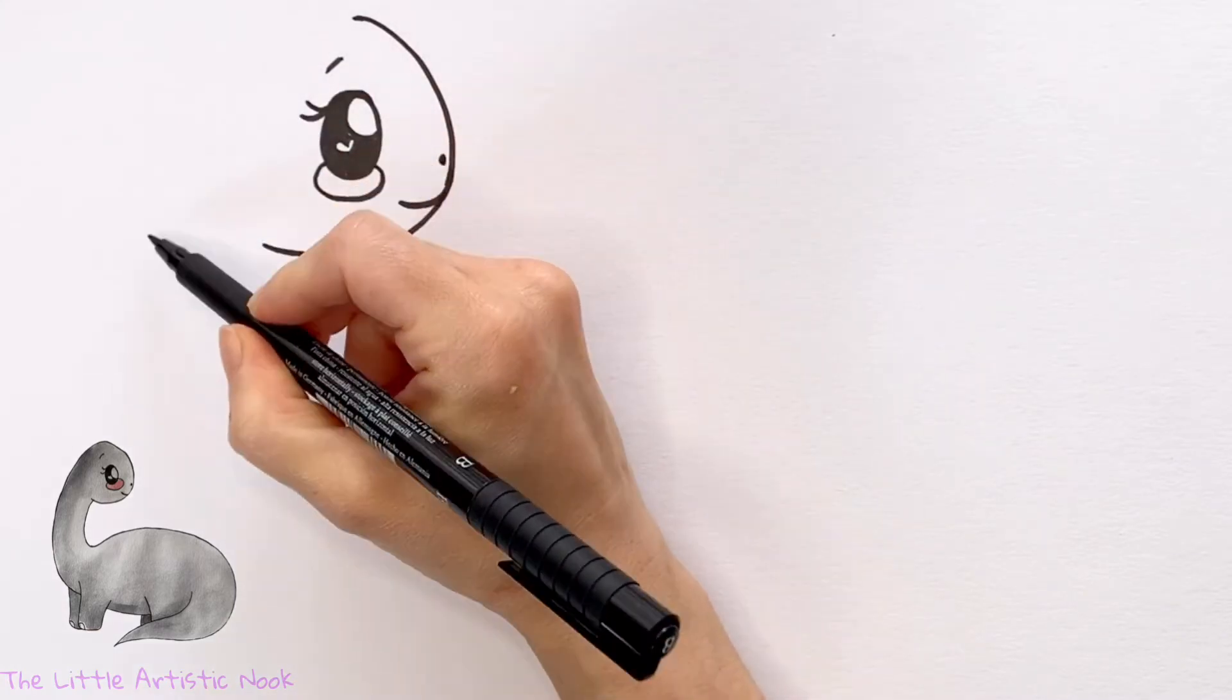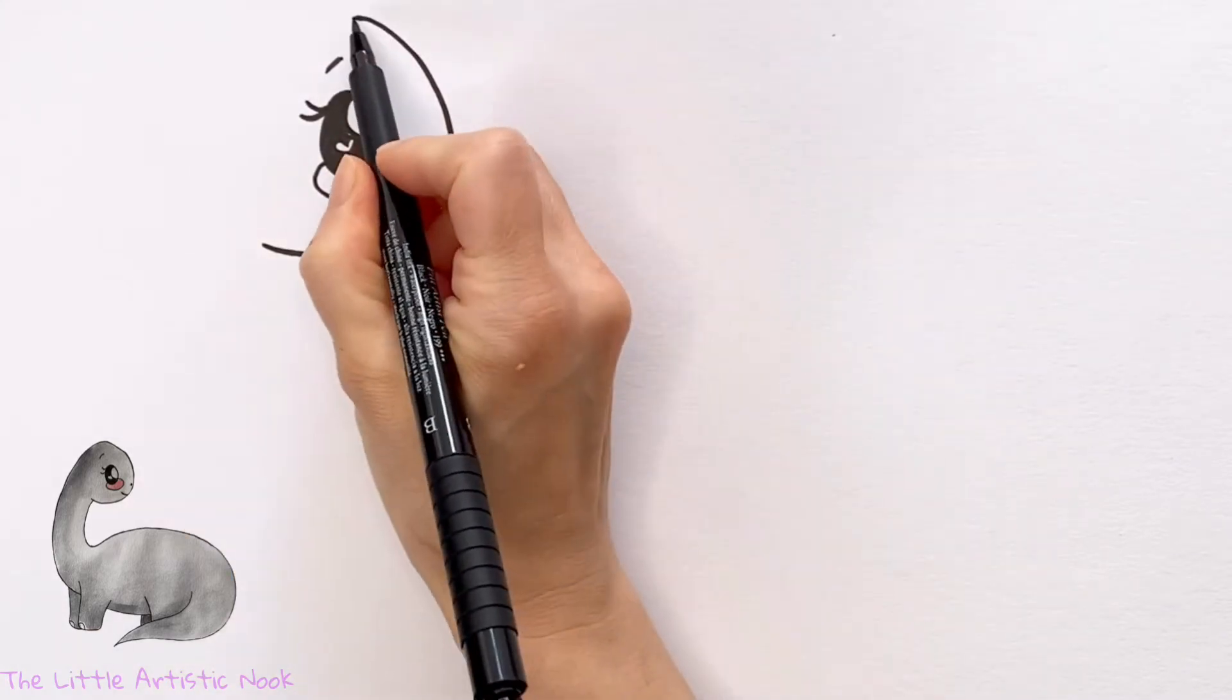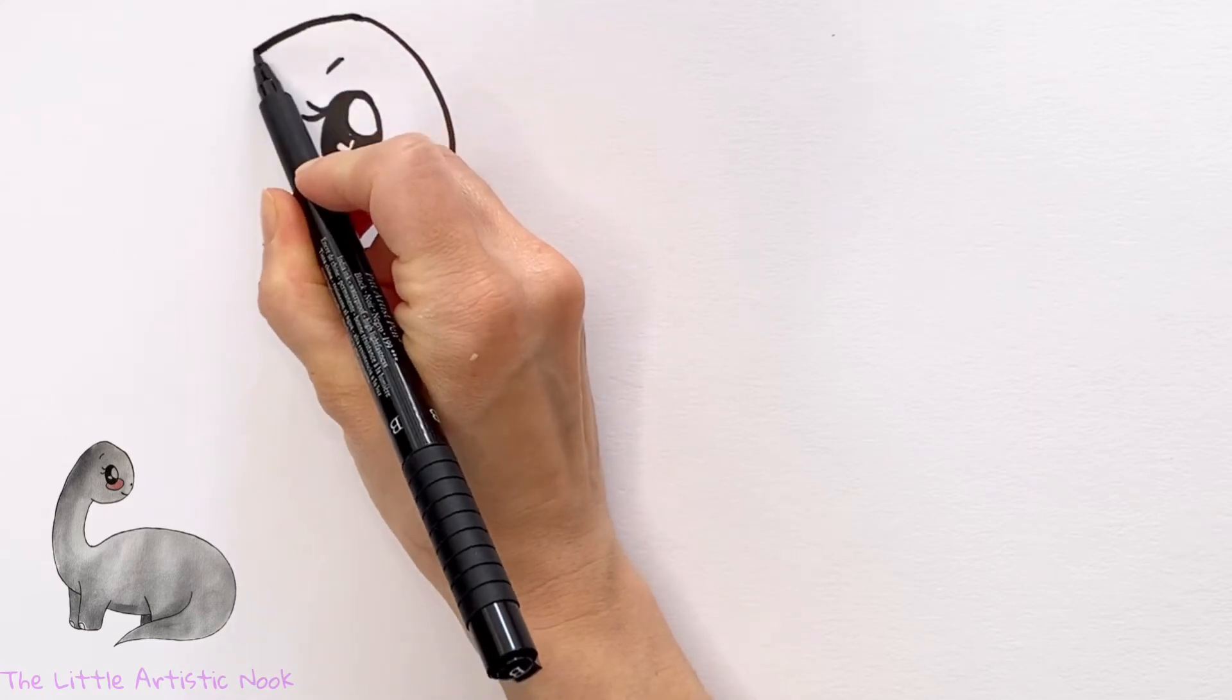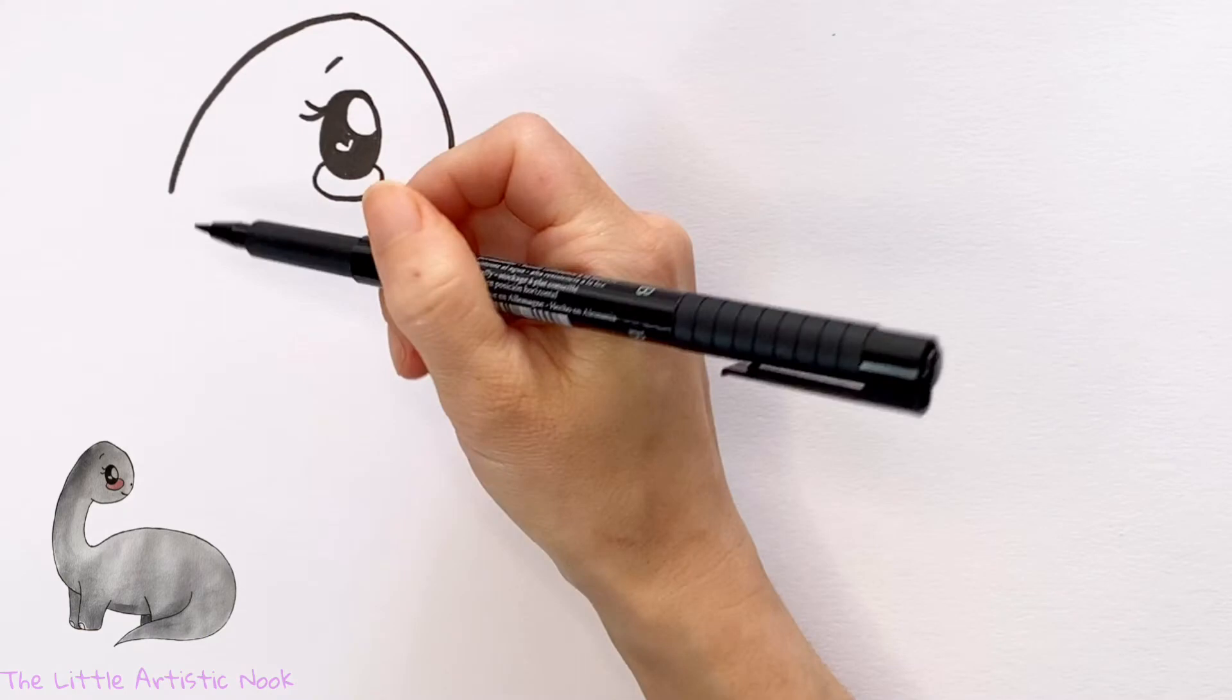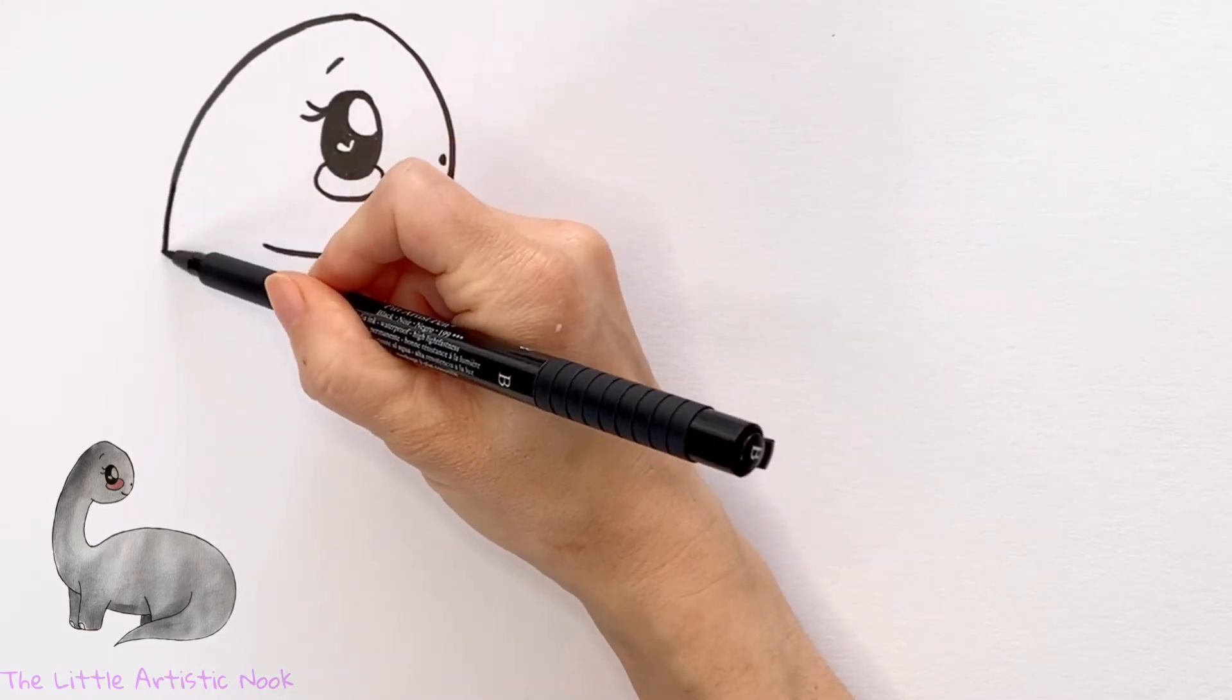I'm going to start to curve a line towards the left, and you want it to go past the bottom of the face. So really bring it towards the left side of the page, and then you're going to start to straighten it down towards the bottom.